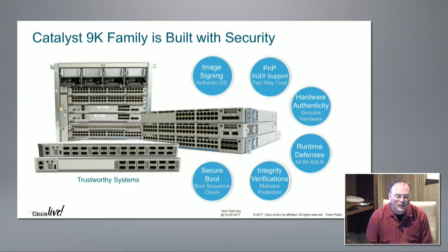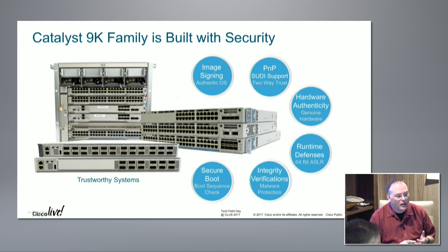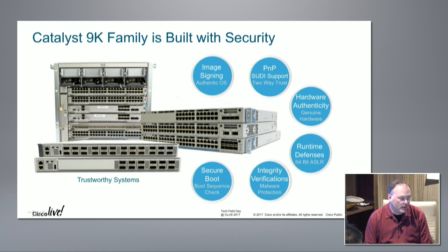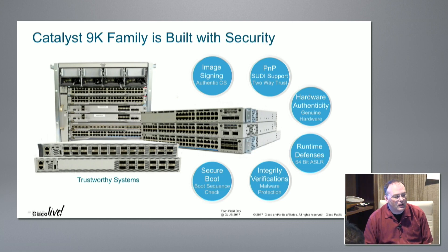The last point about CAT 9K — Mohamed will drill into this more — is the built-in security, what we call trustworthy systems, throughout the solution. We've done things like secure boot, image integrity verification, and image signing to make sure the hardware and software of the platform hasn't been tampered with — so you can be sure that this system, which is really the heart of your network, is trustworthy.